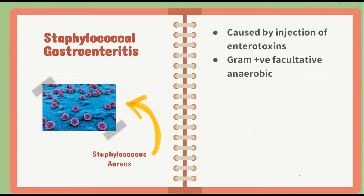Next we have Staphylococcal gastroenteritis, caused by Staphylococcus aureus. It is caused by ingestion of enterotoxins, which affect the gastrointestinal tract. S. aureus is a gram-positive, facultative anaerobic bacteria — meaning it can grow in the presence or absence of oxygen. It mainly grows between 7 to 48 degrees Celsius.